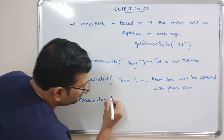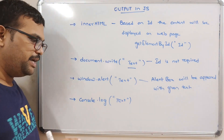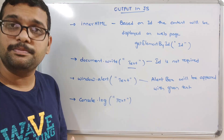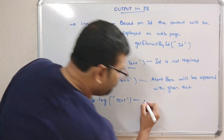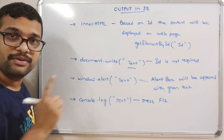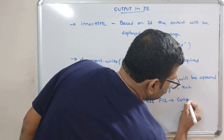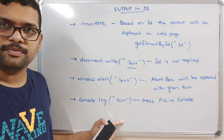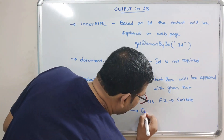The next one is console.log, where we can also write text. This will be displayed for debugging purposes — it will not be displayed directly on the screen. In order to display the text, press F12 on the keyboard and go to the console field; there you can find the output. This is for debugging purposes.